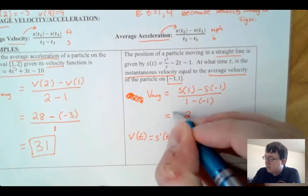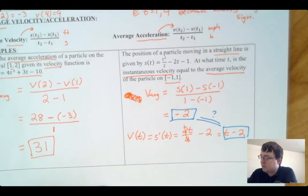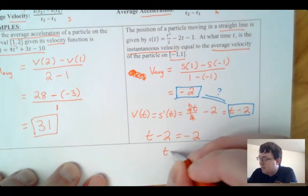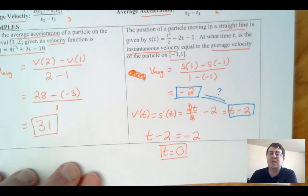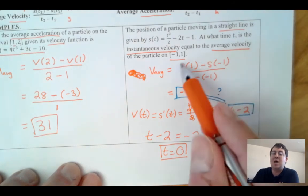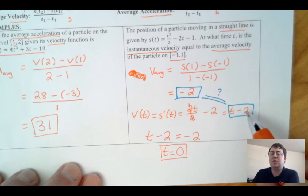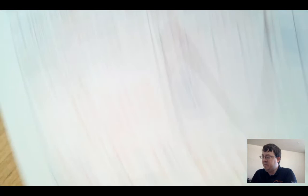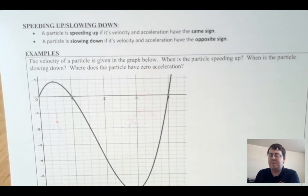Now I want to know at what time t the instantaneous velocity equals the average velocity. Setting t − 2 = −2 and adding 2 to both sides gives t = 0. So at t = 0 — right in the middle of that interval — the instantaneous velocity equals the average velocity of −2. This is the point where the derivative equals the slope of the secant line.